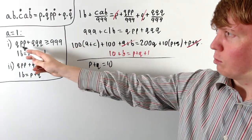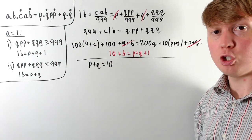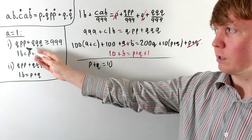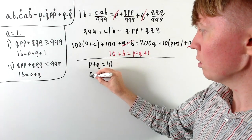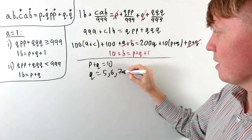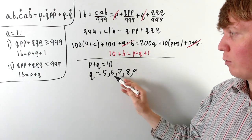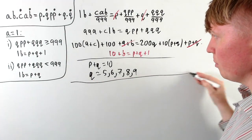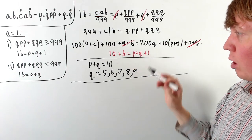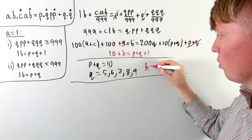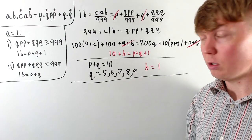With p plus q equals 10, some values of q are ruled out. Since qpp plus qqq must be greater than or equal to 999, q can't be 1, 2, 3, or 4 — the sum would be too small. So q can be 5, 6, 7, 8, or 9, with p being 5, 4, 3, 2, or 1 respectively. Since p plus q is 10, we get 10 plus b equals 11, so b equals 1. Now a and b are known; we just need to find c for each case.